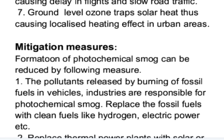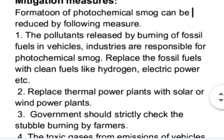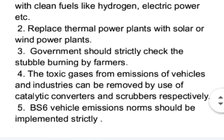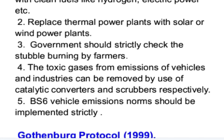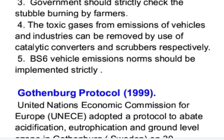Next are the mitigation measures. Formation of photochemical smoke can be reduced by the following measures. Pollutants released by burning of fossil fuels in vehicles and industries are responsible for photochemical smoke, so we should replace fossil fuels with clean fuels like hydrogen and electric power. Replace thermal power plants with solar or wind power plants. Government should strictly check stubble burning by farmers. Toxic gases from vehicle and industrial emissions can be removed using catalytic converters and scrubbers respectively. BS6 vehicle emission norms should be implemented strictly.